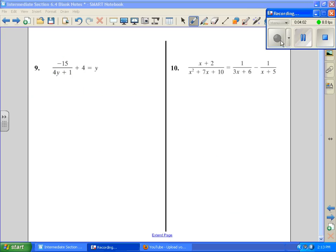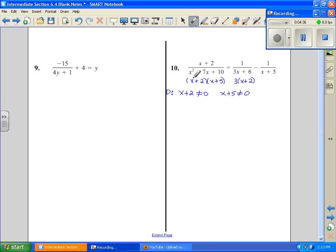Number 10 is going to be our last problem. The first thing we want to do is work with our domain. So, we're going to factor anything that we can factor. This factors by bottoms up to x plus 2, x plus 5. This has a GCF of 3, so I want to take it out, I get x plus 2, and this does not factor. Now I want to take each one of these for my domain and set it not equal to 0. x plus 2 cannot equal 0, x plus 5 cannot equal 0. I did this one. 3 cannot equal 0, and then x plus 2 is already represented, and x plus 5 is already represented. So, now I'm going to solve. And this tells me no information.